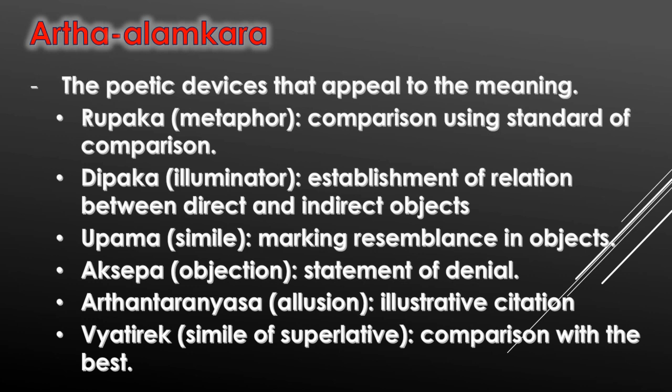Artha Alamkara was relatively more detailed and contained poetic devices that appealed to the meaning of the poetry. There were at least 46 Artha Alamkaras mentioned by Bhama. We will deal with the major ones. The first is Rupaka or Metaphor — a comparison using standards of comparison. The second is Deepaka or Illuminator — the establishment of relation between direct and indirect objects. The third is Upama or Simile — marking the resemblance in objects. The fourth is Akshepa or Objection — a statement of denial passed at something that is difficult to believe.